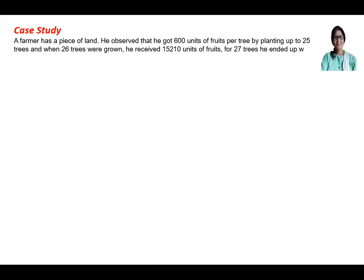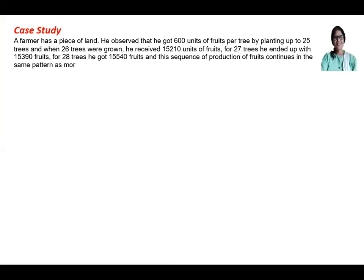For 27 trees, he ended up with 15,390 fruits, and for 28 he got 15,540 fruits. This sequence of production of fruits continues in the same pattern as more trees in excess of 25 were grown. Based on this, he had to answer some questions — five parts in total.